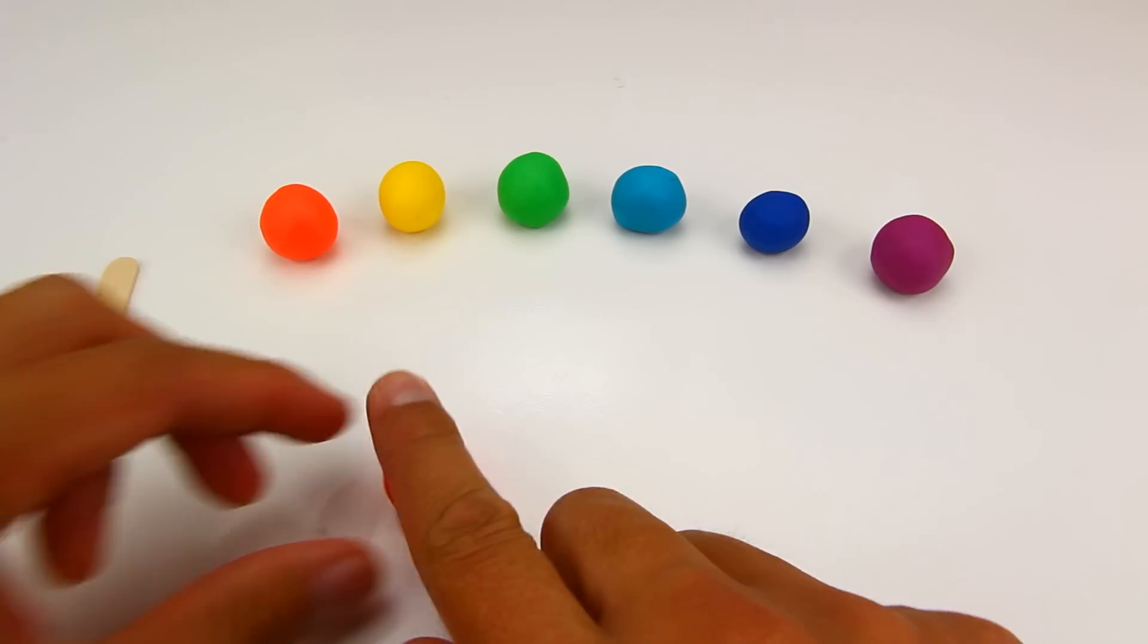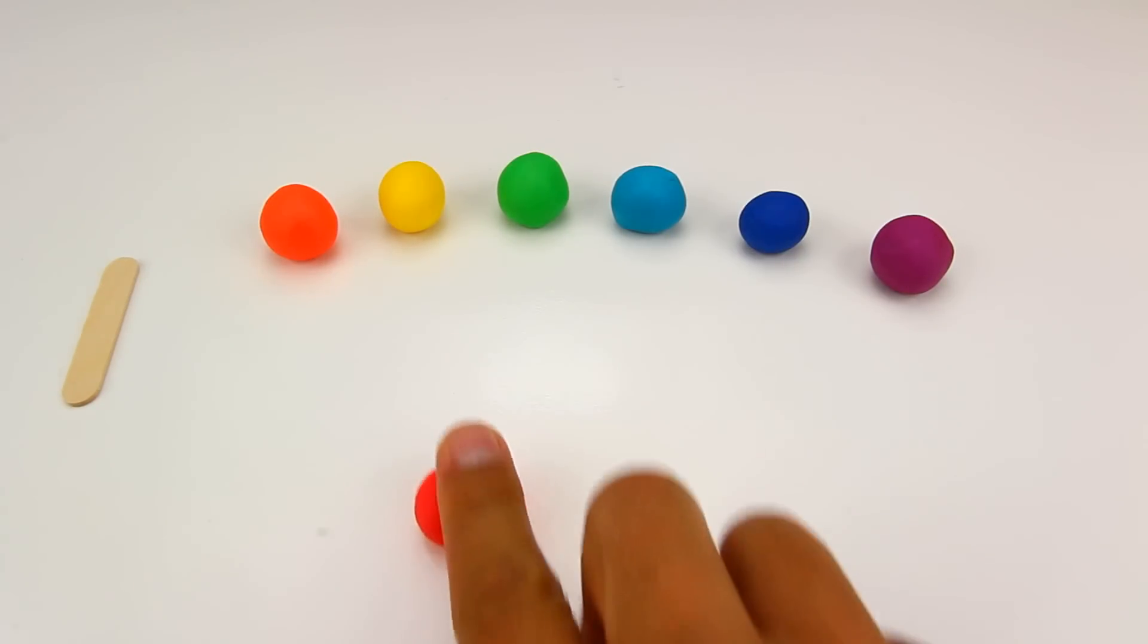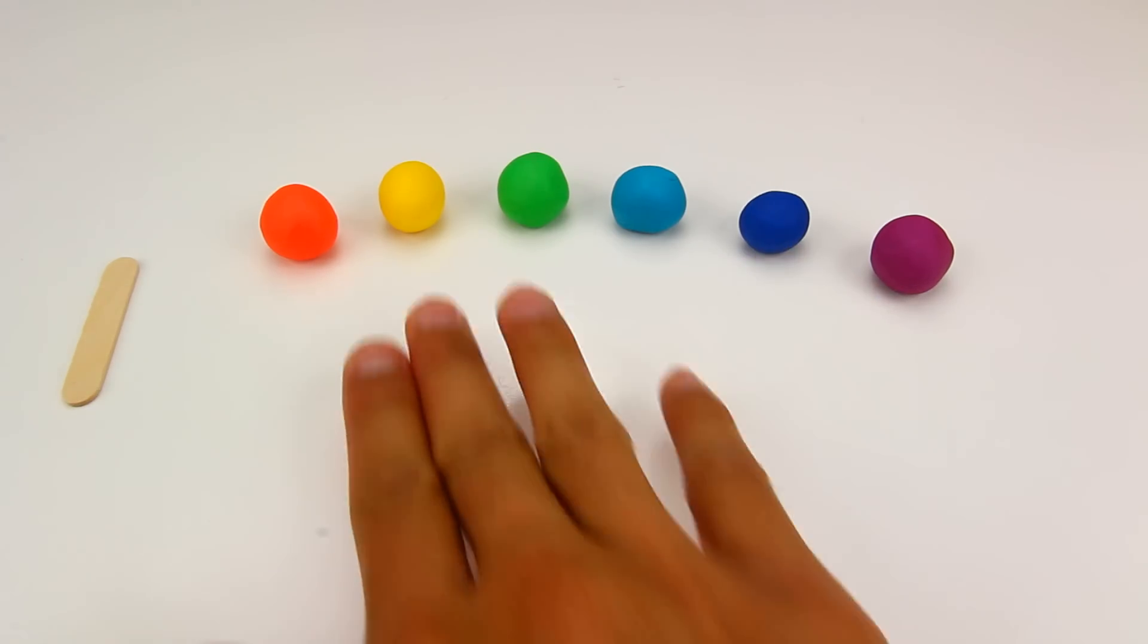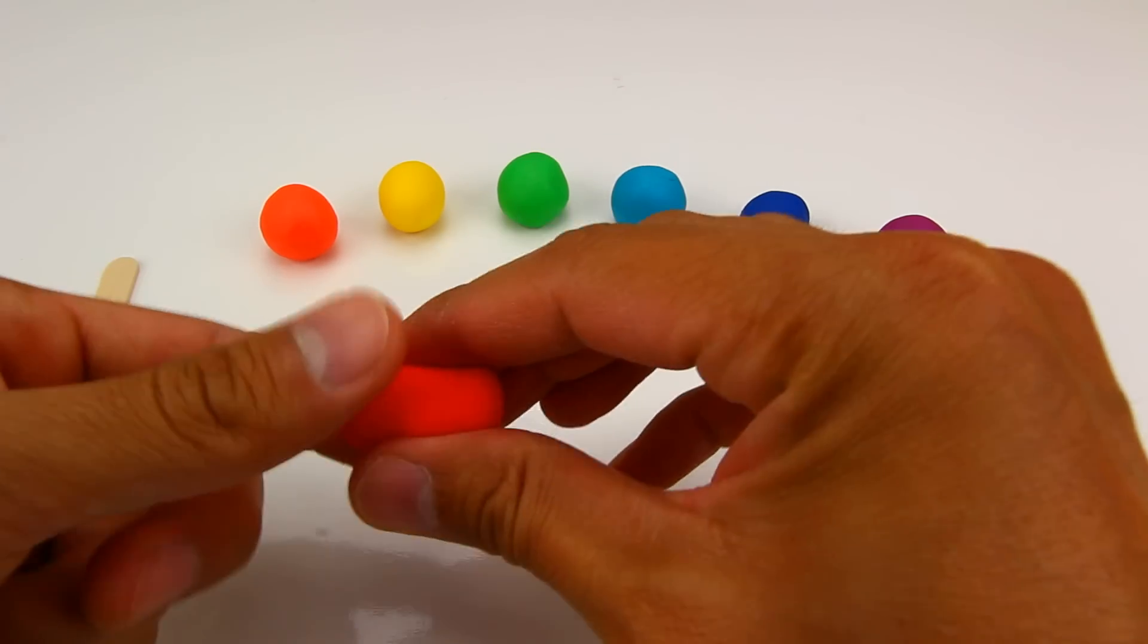First I'll start off by rolling each of these balls into little cylinders or rods of Play-Doh.